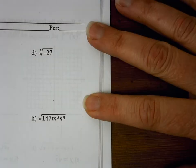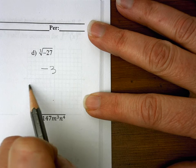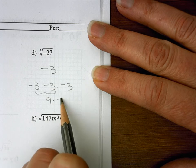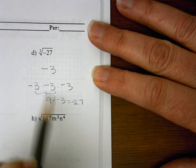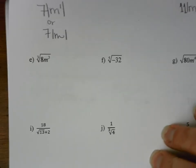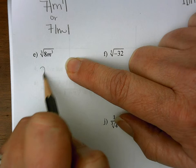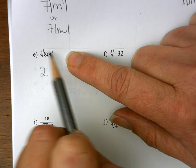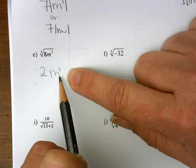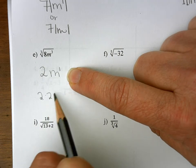For d, I'm taking the cube root of negative 27. That would be negative 3, because negative 3 times itself 3 times is negative 27: 9 times negative 3 is negative 27. For e, I want to take the cube root of 8m cubed. The cube root of 8 is 2, because 2 times 2 times 2 is 8. For the power, 3 divided by 3 is 1. Since I started with an odd root and an odd power and ended odd, there's no absolute value. So the answer is 2m.